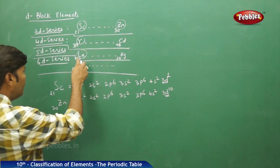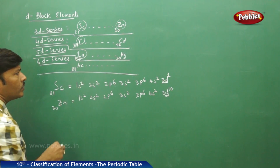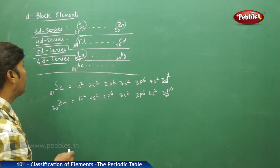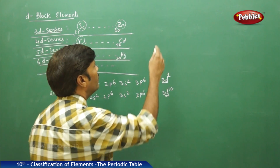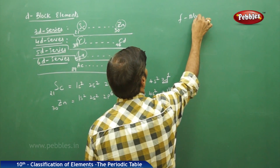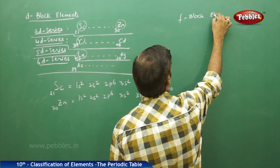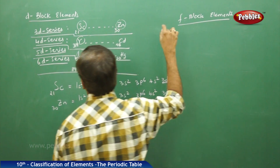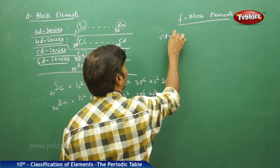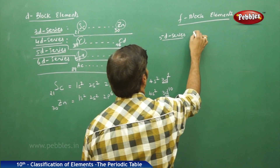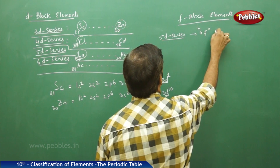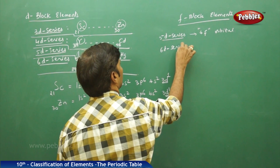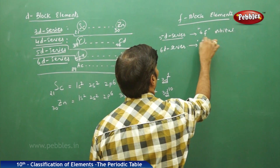These are the electronic configurations of d-block elements. For f-block elements, the 5d series contains the 4f orbital and the 6d series contains the 5f orbital.